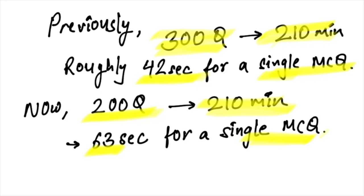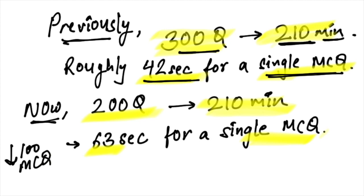Hello everyone, today I'll explain how the information bulletin has changed the scenario. Previously, 300 questions were asked in 210 minutes, roughly 42 seconds for a single MCQ. Now they've reduced that by 100 MCQs. Now it's 200 MCQs in 210 minutes, so 63 seconds, over a minute for a single MCQ.